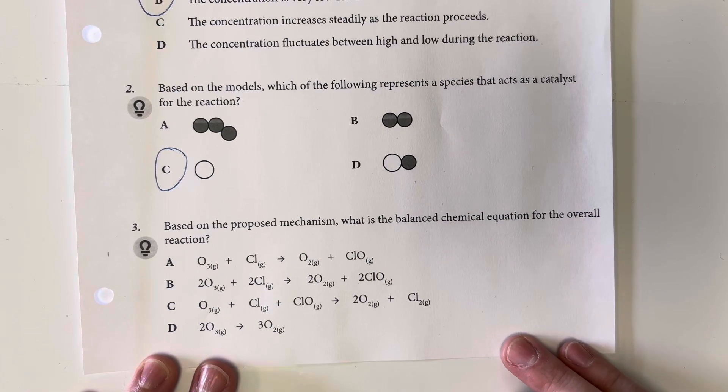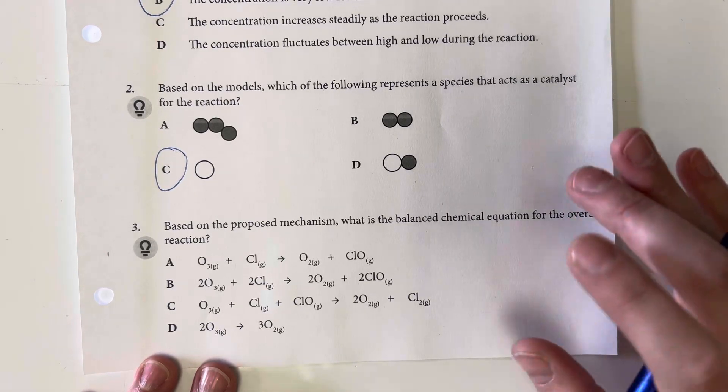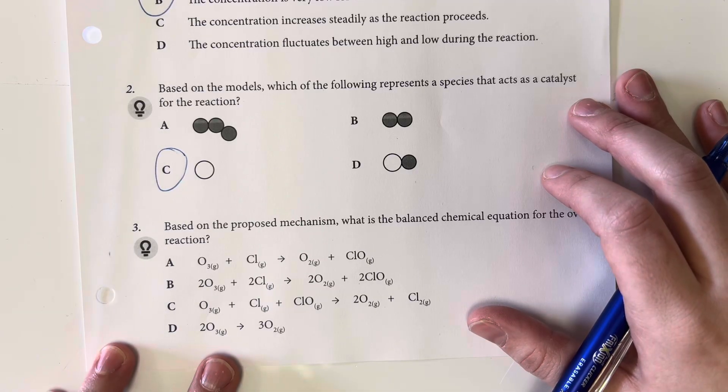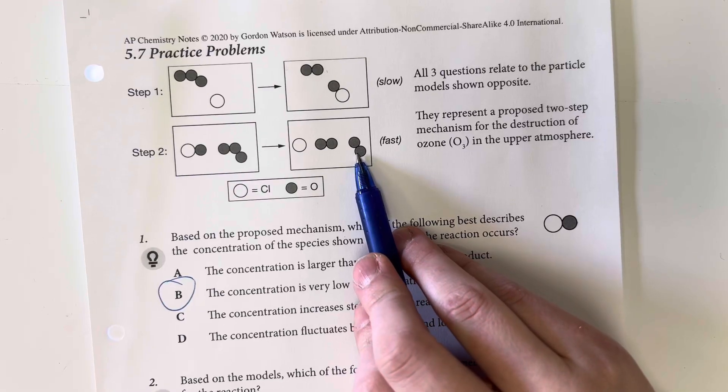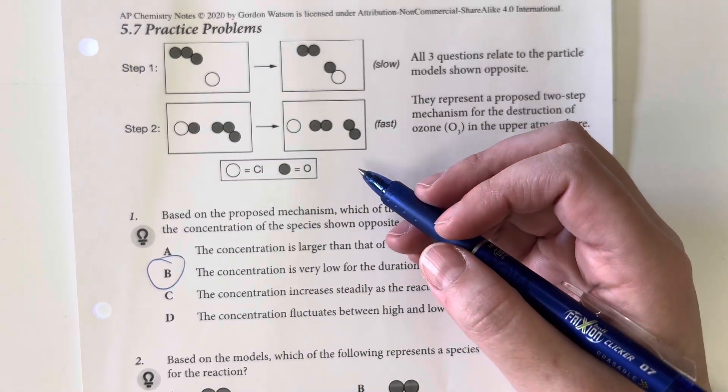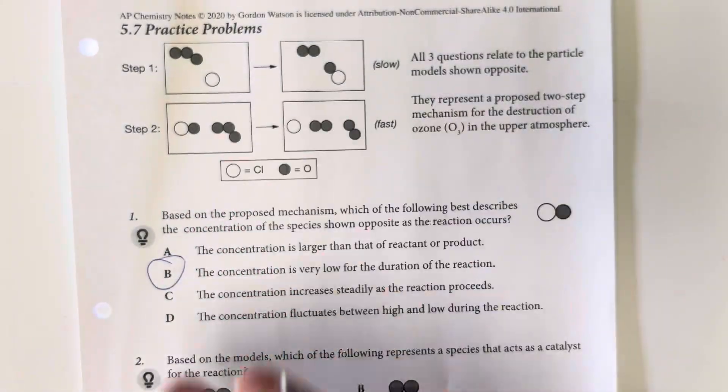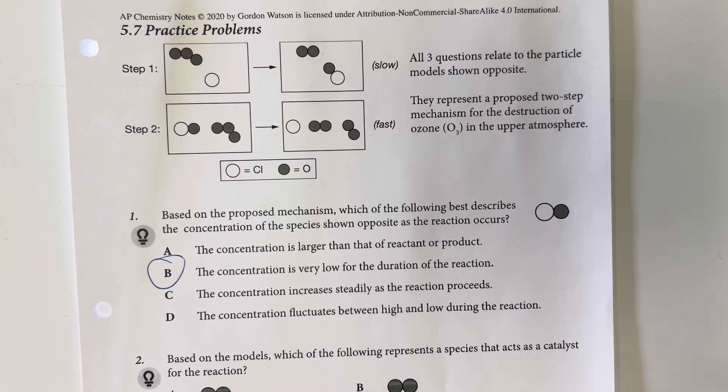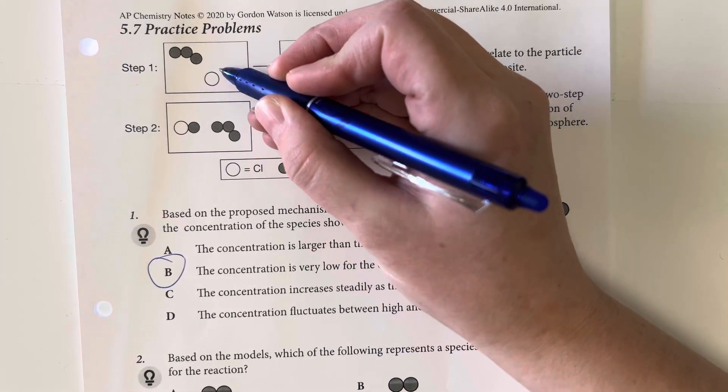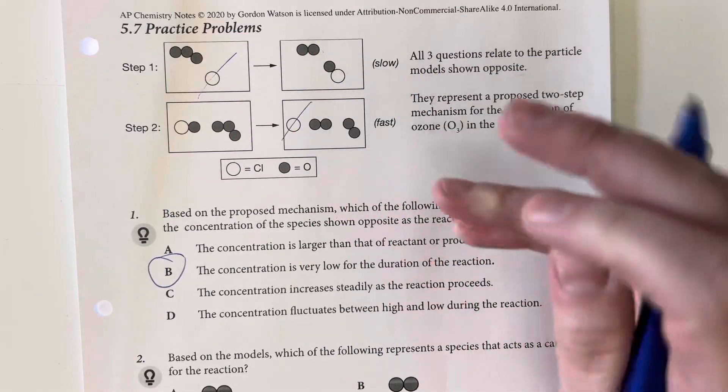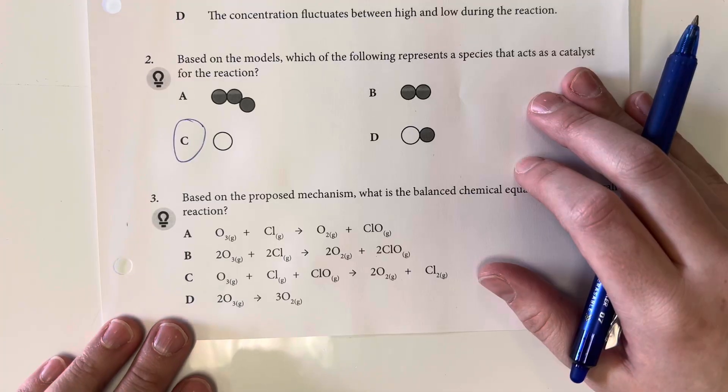Based off of the proposed mechanism, what is the balanced chemical equation for the overall reaction? So we have ozone turning into oxygen. We ignore anything that is going to remain unchanged from the beginning to the end. So that means that we are not going to be including any catalysts. We just determined that chlorine was a catalyst, so we are not going to include that. Instead we are going to be going from ozone to oxygen as our reaction here.